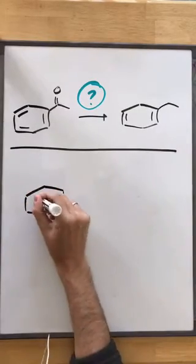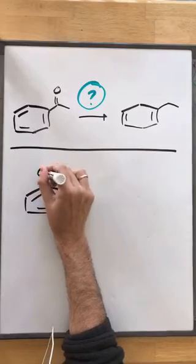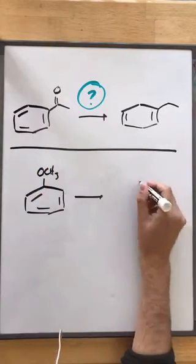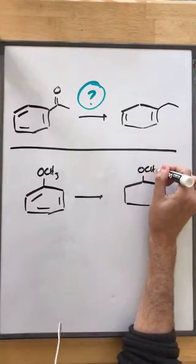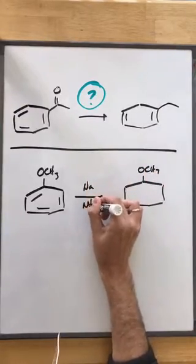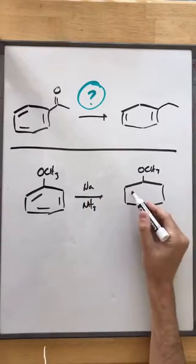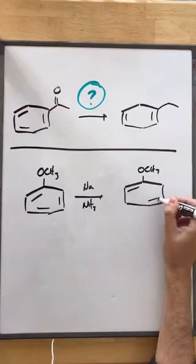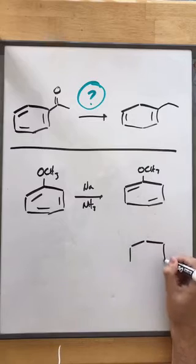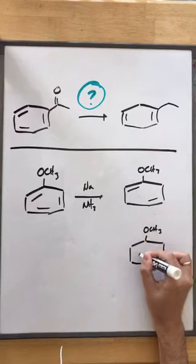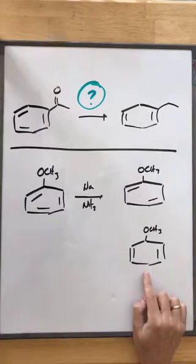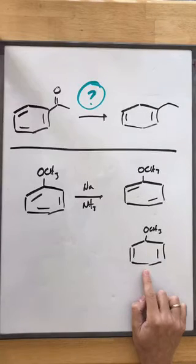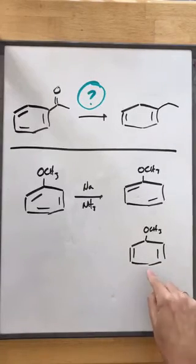So this is the question of the day. I had OCH3, and what I wanted to know was if we do a birch reduction, are we going to get essentially our double bonds this way or are we going to get our double bonds that way? And if I'm not mistaken, I think the majority of you said this one. If I'm not mistaken, I'll have to go double check, but I think you said that one. It's actually this one right here.